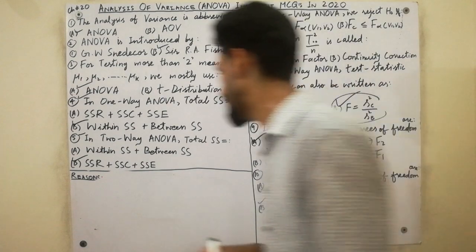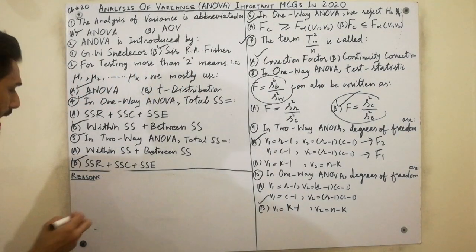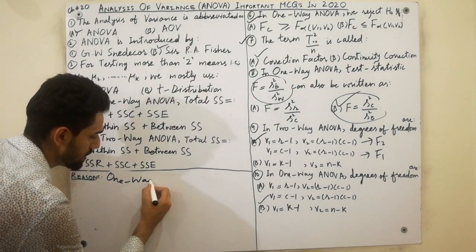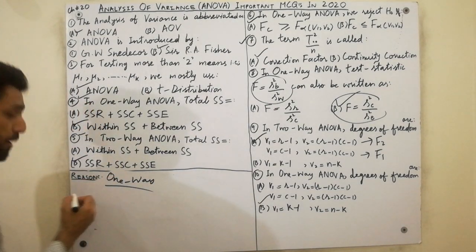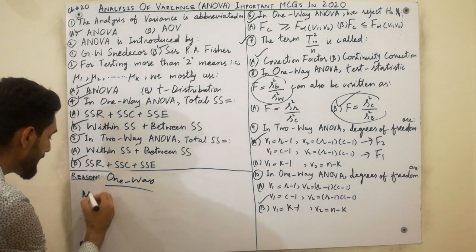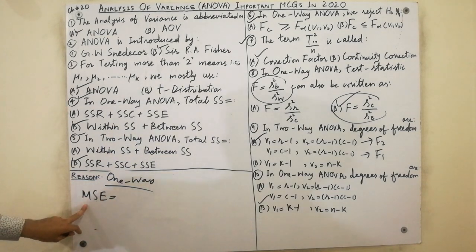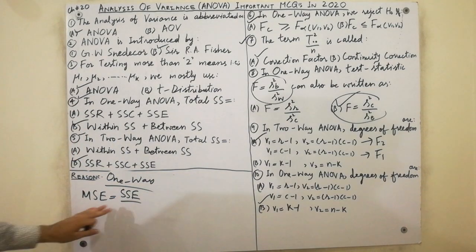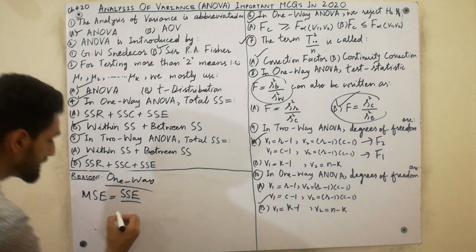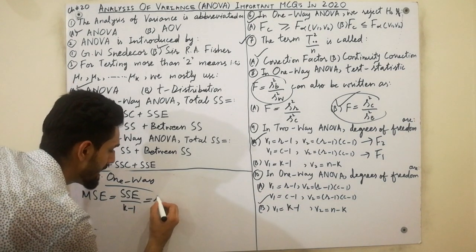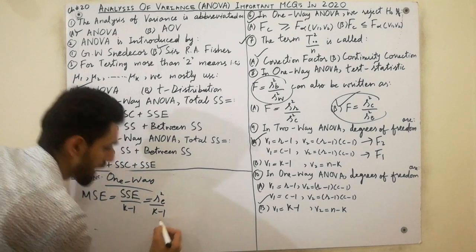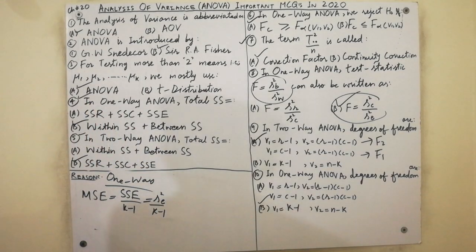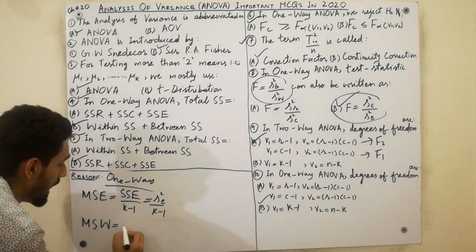Regarding Mean Squared Error in one-way ANOVA: Mean Squared Error (MSE) is equal to Sum of Squared Error (SSE) divided by degrees of freedom.